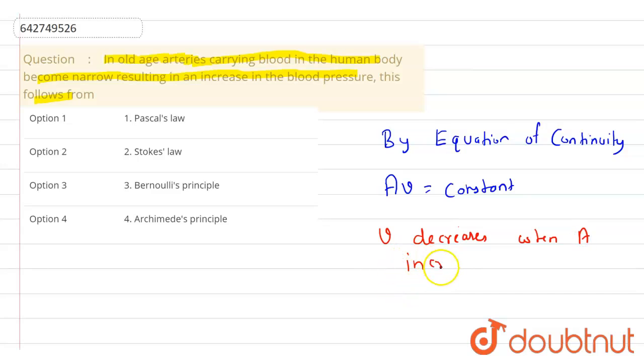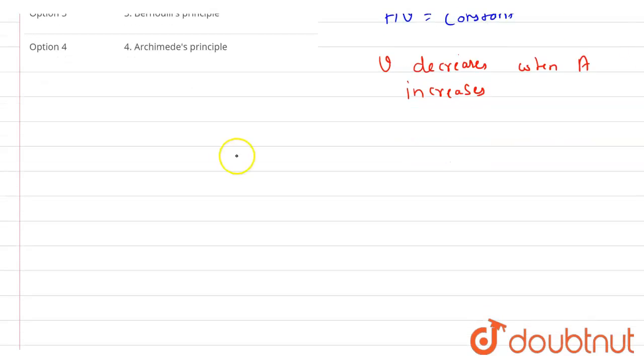Now when we apply Bernoulli's theorem here, according to Bernoulli's theorem if height is same then pressure plus 1 by 2 rho v square, and this is going to be constant. So this whole sum is going to be constant.